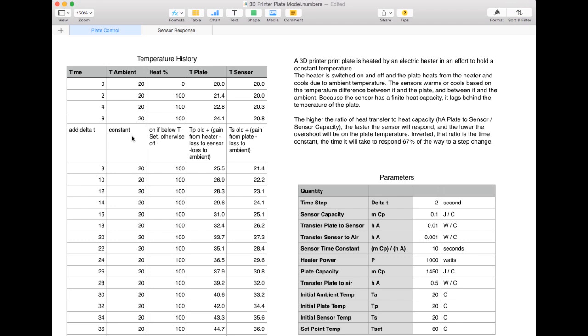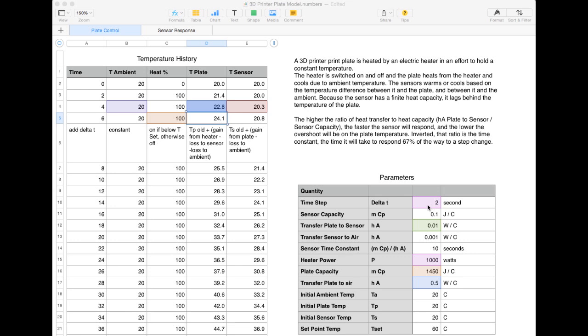The ambient temperature is held as a constant. The heat is either off or on depending on whether the sensor is below or above the set point. The plate temperature is taken from the previous plate temperature plus any gain from the heater minus any losses to the sensor, which is colder than the plate, minus any losses to the ambient, which is colder than the plate. These input parameters are important to determining that formula: time step, how far forward we're going in time, how well energy is transferred from the plate to the sensor, and how much power is coming from the heater, what the capacity of the plate is, how much energy it takes to heat it up by one degree Celsius, and finally how readily heat is transferred from the plate to the air.